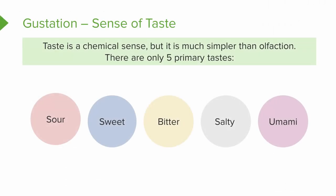There are five primary tastes: sour, sweet, bitter, salty, and umami, which is like a meaty taste.